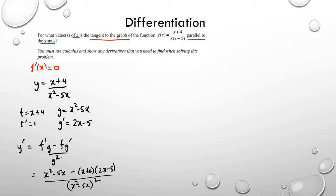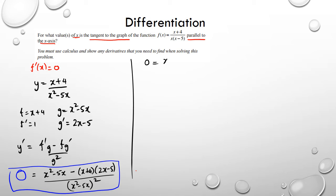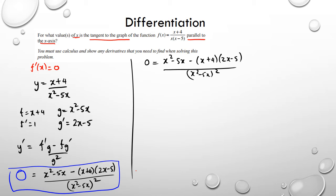If the gradient equals 0, then the entire gradient function equals 0. So I set 0 equals x squared minus 5x minus (x plus 4)(2x minus 5), all divided by (x squared minus 5x) squared. Because the left-hand side is 0, when I rearrange, the denominator gets multiplied by 0 and disappears. So all I have is 0 equals x squared minus 5x minus (x plus 4)(2x minus 5).